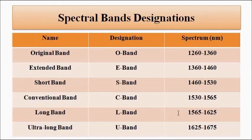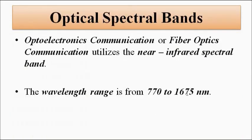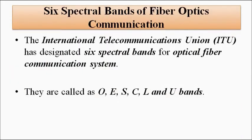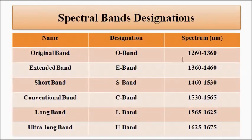The L band is the Long Band, covering 1565 to 1625 nanometers. The U band is the Ultra Long Band, covering 1625 to 1675 nanometers. This entire wavelength range up to 1675 nm is divided into these six spectral bands. An important thing to note is that the range from 770 to 1260 nanometers has no specific spectral band designation.